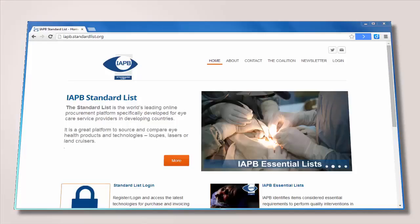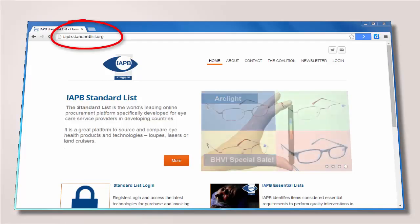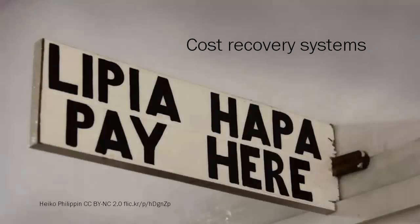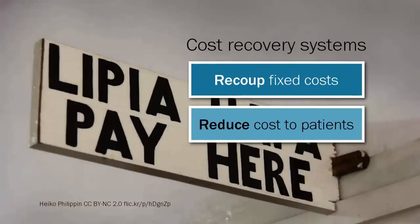Buying intelligently means comparing prices and selecting the best options possible. In addition, using group purchasing to achieve better prices, maintaining a good inventory of materials to reduce wastage, and storing materials appropriately to reduce damage will all help to reduce costs. The International Agency for the Prevention of Blindness has a standard list and website with useful guidance for purchasing — visit iapb.standardlist.org.